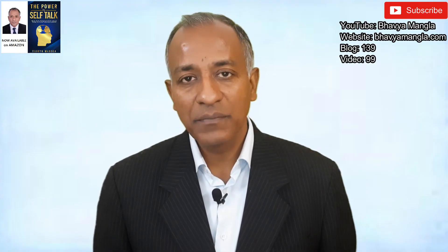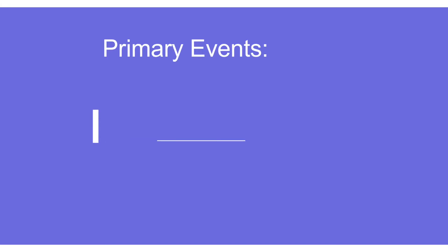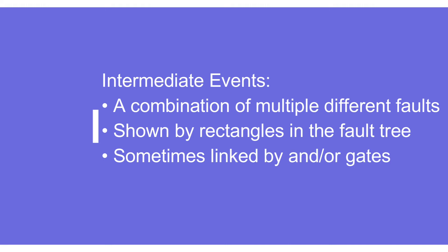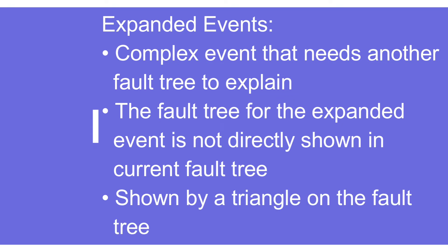Primarily there are three main events in fault tree analysis: the primary event, the intermediate event, and the expanded event. A primary event is made up of basic, undeveloped, and external events — it talks about where the process or system might fail. An intermediate event is a combination of multiple different faults, shown by a rectangle in the fault tree, and it is sometimes linked with gates. The expanded event is a complex event that needs another fault tree to explain; it is not directly shown in the current fault tree, and the symbol used for it is a triangle.